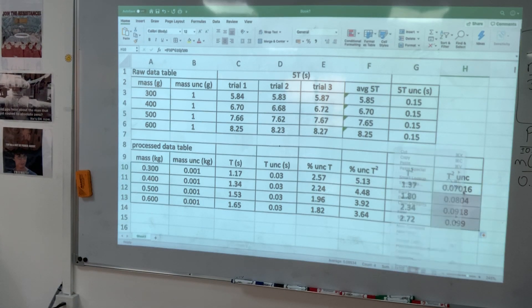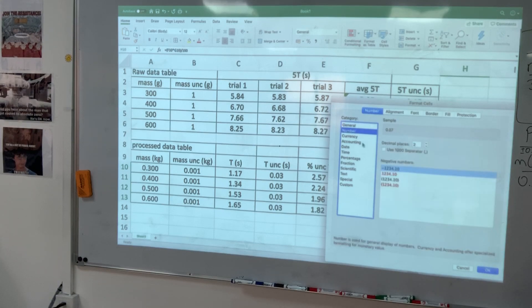Apply it to all the other values, select two decimal places for everyone, and your data table is complete.